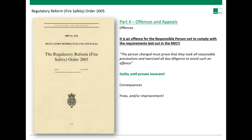Part four covers offences and appeals. Any person with any degree of control can be held accountable under law for failure to carry out their statutory duties. It is possible that an employer, owner or occupier as a corporate entity could be the responsible person, in which case it would be their individual and joint responsibility to discharge the duties. Failure to comply can lead to fines and/or imprisonment. Notably, this law states that you are guilty until proven innocent, which is quite significant.